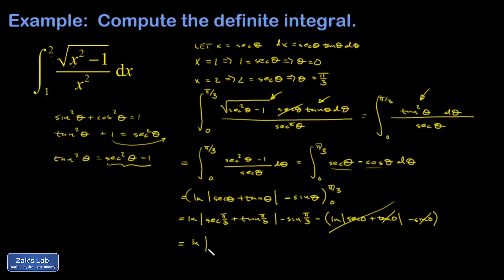And if I evaluate the upper limit here, I have the secant of pi over three. That's one over the cosine of pi over three. But the cosine of pi over three is a half. So one over a half gives me two. And then I have the tangent of pi over three, which would be the sine of pi over three over the cosine of pi over three. So that gives me a root three. And then minus the sine of pi over three, which is root three over two.